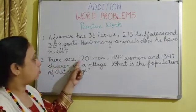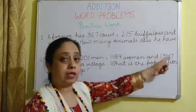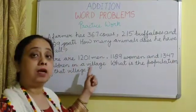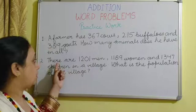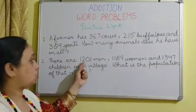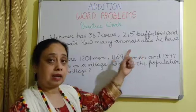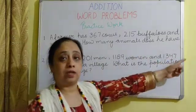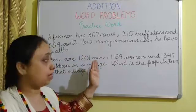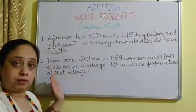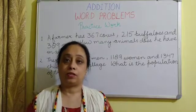In the second word problem: There are 1201 men, 1189 women, and 1347 children in a village. What is the population of that village? First write the number of men: 1201. Then the number of women: 1189. Then the number of children: 1347. Add all three to find the total population. Hope you will do the practice work and enjoy yourself. Bye!